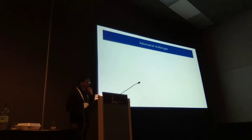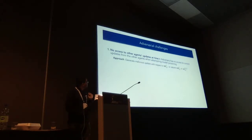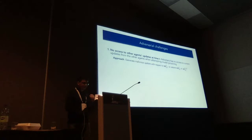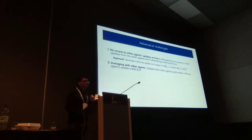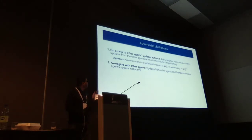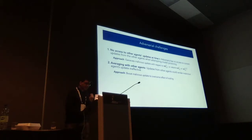What are some challenges for the adversary in this setting? The first challenge is that the adversary doesn't have access to the other agents' updates at time t. Our approach to this is simple: we generate a malicious update with respect to the previous state of the model and assume the model doesn't change too much over iterations — and it turns out in practice this works well. The second problem is that there's averaging with the other agents at every step. The malicious agent is trying to do something different, so its updates could get swamped out. Our approach is to boost the malicious update to overcome the effect of the one-over-number-of-agents scaling.